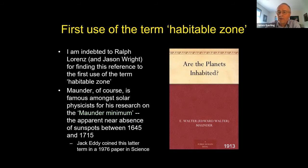Maunder didn't create that term — it was coined by Jack Eddy, a solar physicist at the National Center for Atmospheric Research, in a 1976 paper in Science. I gave this talk at NCAR last year and mentioned this; some of the older folks there still remember Jack Eddy talking about it.